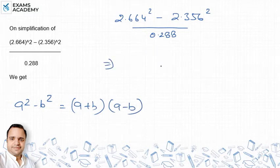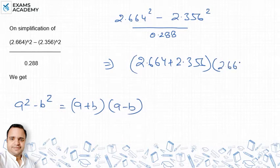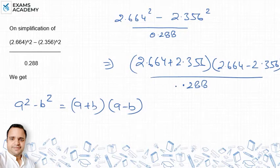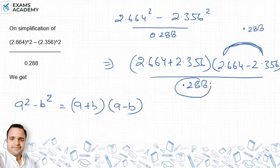When we find out this value 0.288, we minus this value is 0.288. It means this area we can write 2.664 minus 2.356, we can write 2.664 plus 2.356.